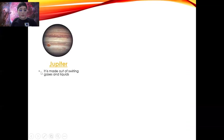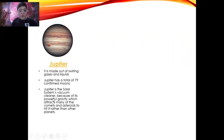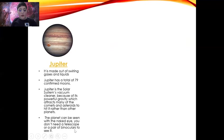Jupiter. It is made out of swirling gases and liquids. Jupiter has a total of 79 confirmed moons. Jupiter is the solar system's vacuum cleaner because of its powerful gravity, which attracts many of the comets and asteroids to it rather than other planets. The planet can be seen with the naked eye; you don't need a telescope or a pair of binoculars to see it.